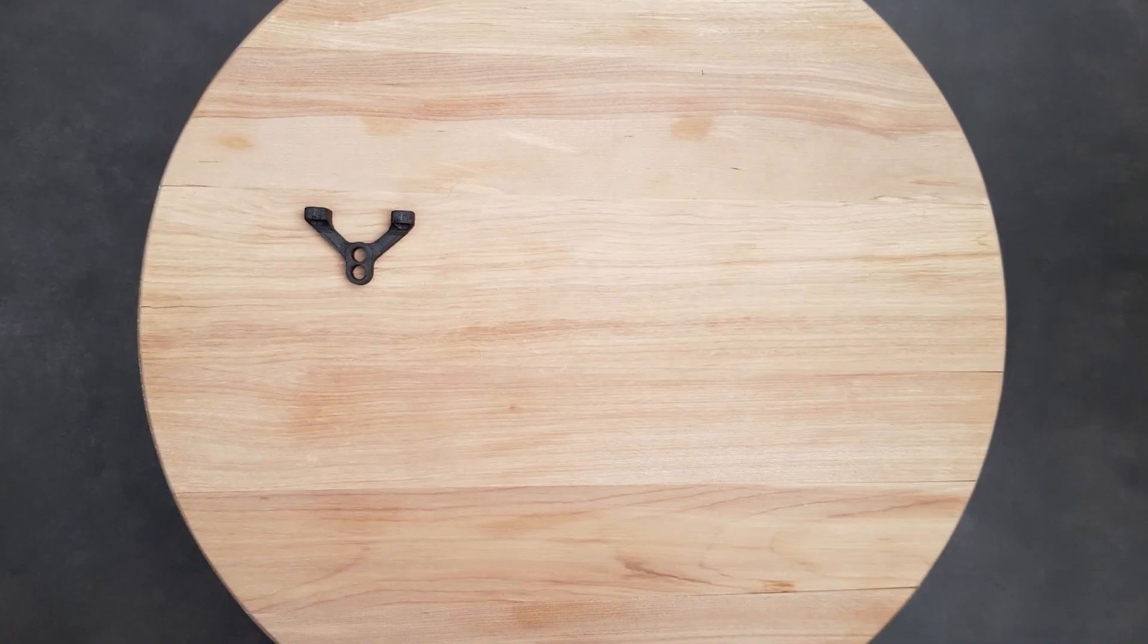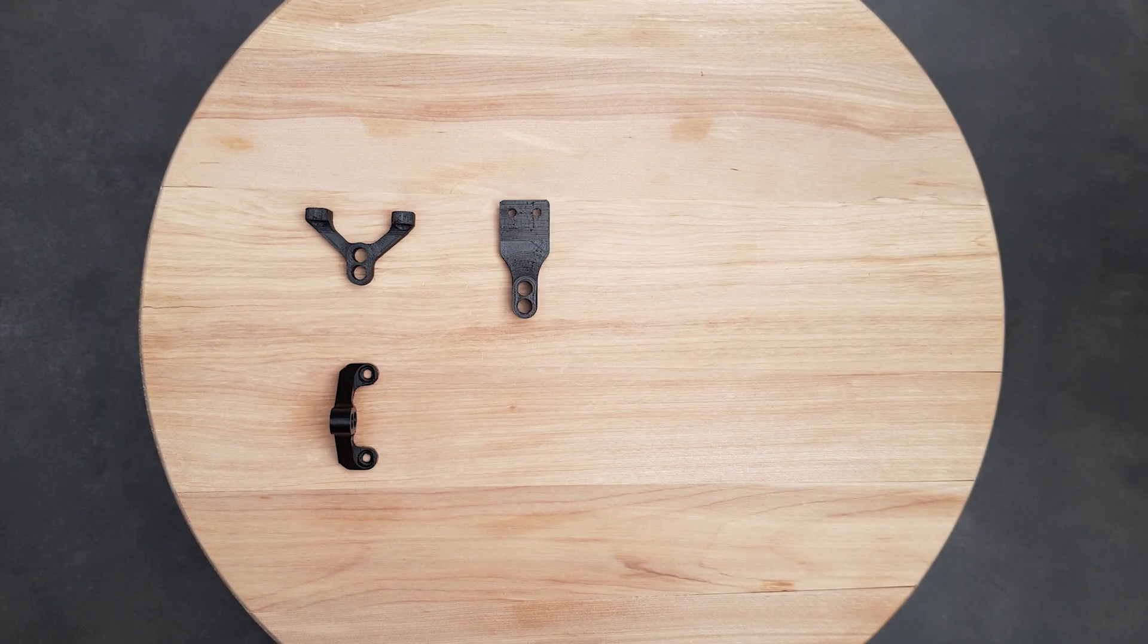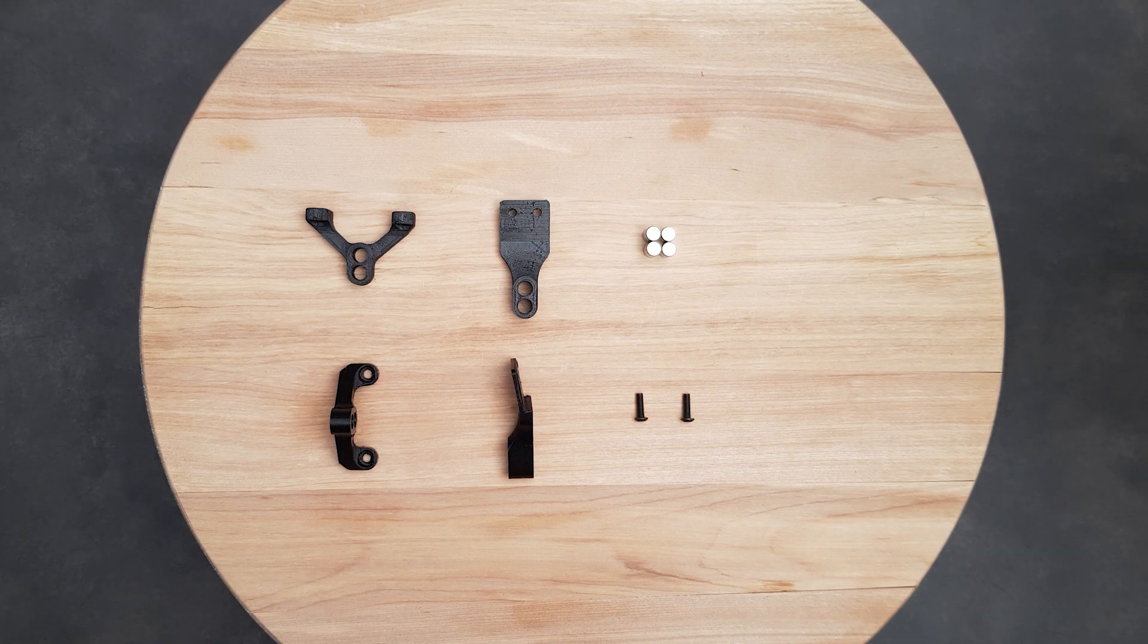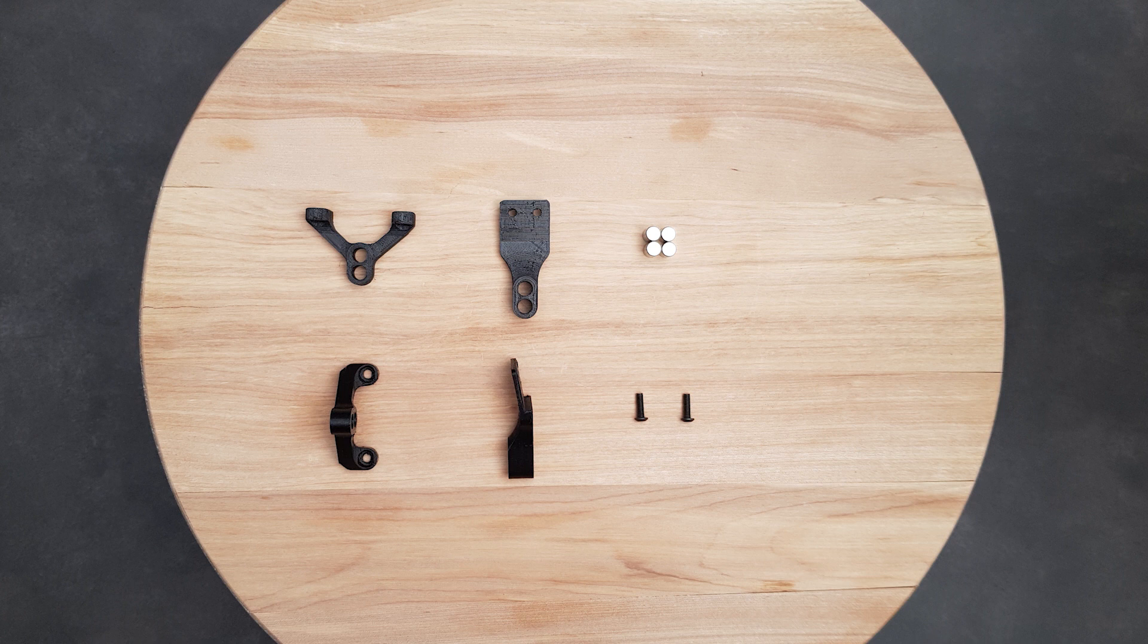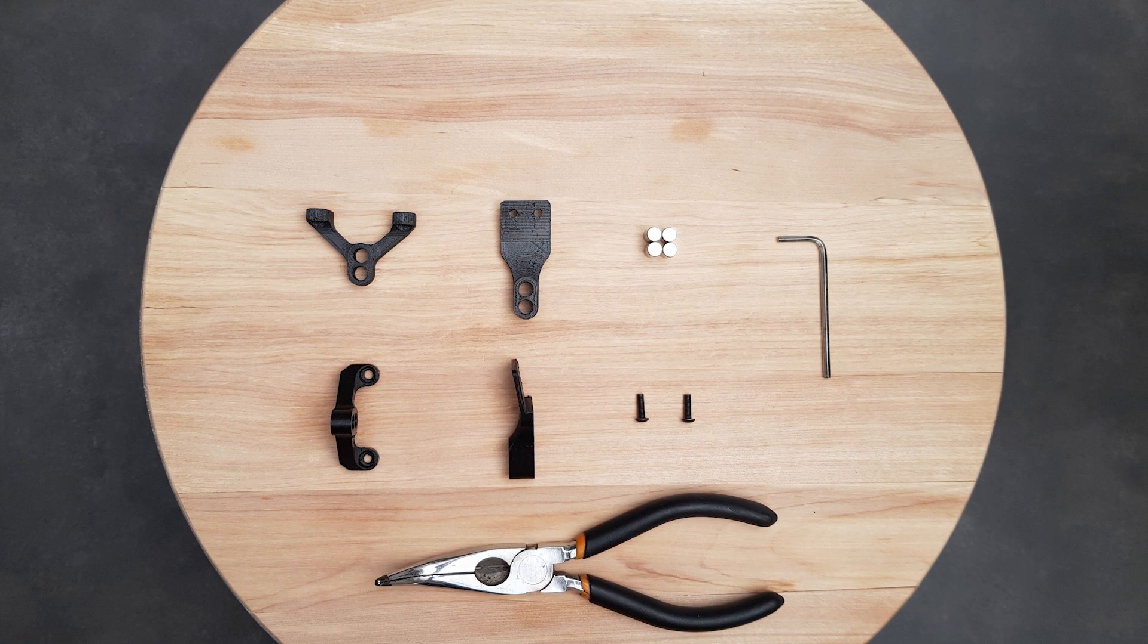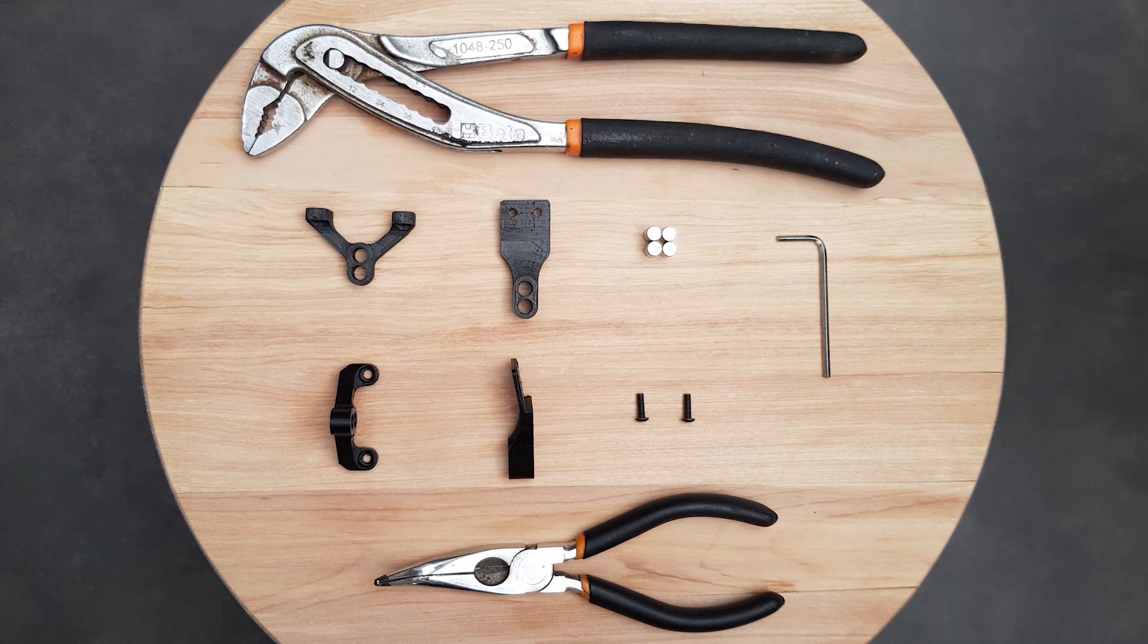Besides your 3D printed parts, here is a couple of things you will also need. Four neodymium magnets. Two 10mm length M3 screws. Hex wrench for the screws. And it would be great to have long nose pliers and a groove joint pliers.